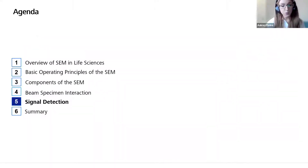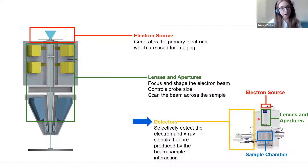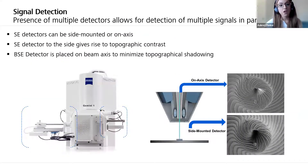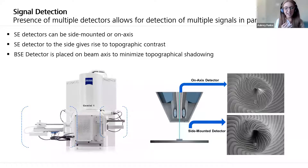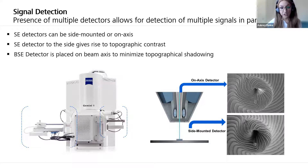Now we're going to get into signal detection. Detectors selectively detect the electron or x-ray signals produced by that beam-specimen interaction. The presence of multiple detectors on the SEM allows us to detect multiple signals in parallel — it's kind of like having a Swiss army knife. You can look at compositional contrast or topography contrast or a combination of the two, getting two, three, four, or five very different renderings of how that sample looks, each providing different types of important information so you can decide what's most important for your specific type of research.